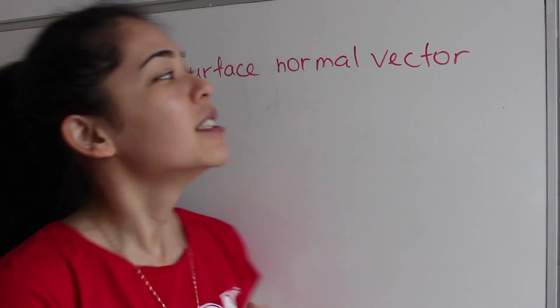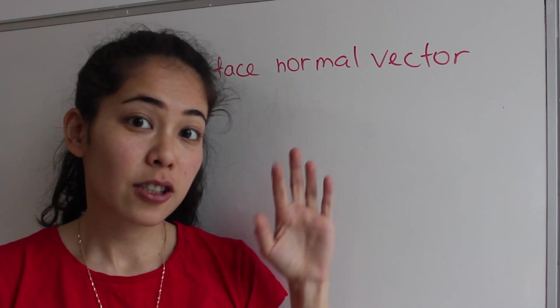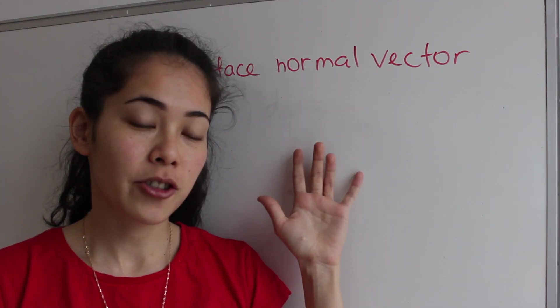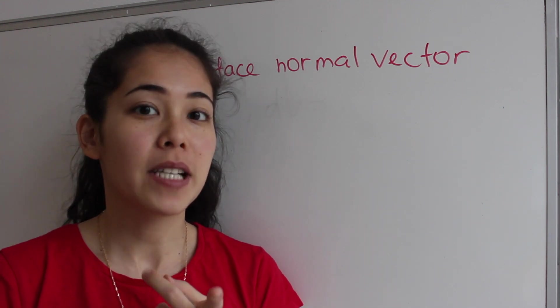So let me continue with the surface normal vector explanation, because we need this notion to understand the second part of the principle of continuity when we open up the integrals.